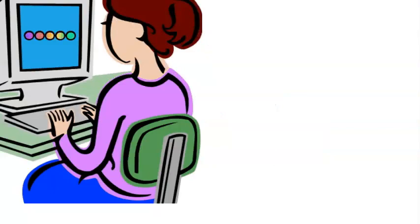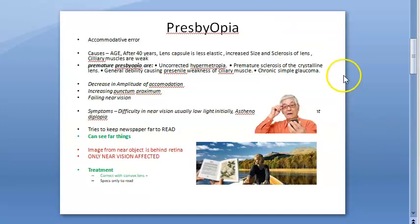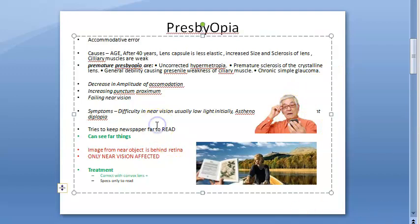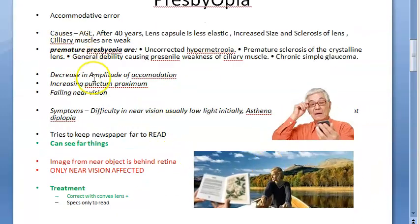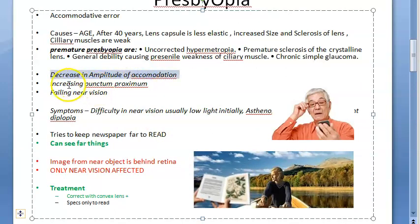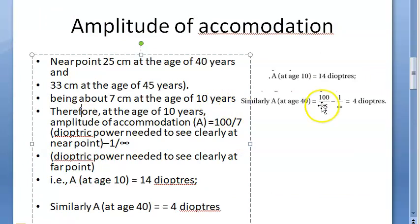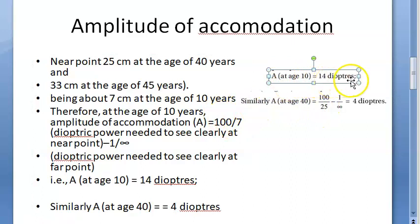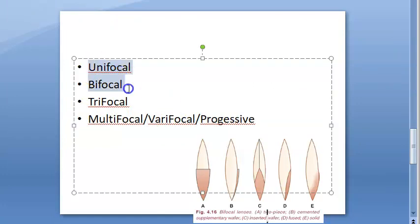Presbyopia is an accommodative error. As the person turns 40, accommodation reduces and they cannot see near objects but can see far. It is corrected with a convex lens. There is a decrease in amplitude of accommodation. The formula: amplitude of accommodation equals age divided by 4 diopters (e.g., at age 40 it's approximately 4 diopters). Glasses prescribed include unifocal, bifocal, trifocal, multifocal, varifocal, and progressive lenses.